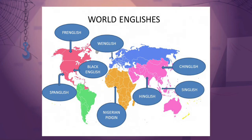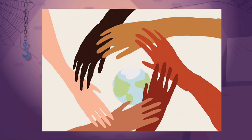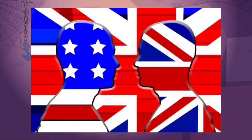Languages develop to fulfill the needs of the societies that use them. Because societies contain a diverse range of social needs, and because these needs can differ across cultures and geographies, multiple varieties of the English language exist. These include American English, British English, Australian English, Canadian English, Indian English, Philippine English, and so on.